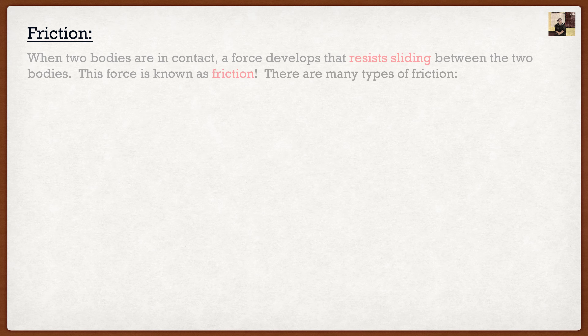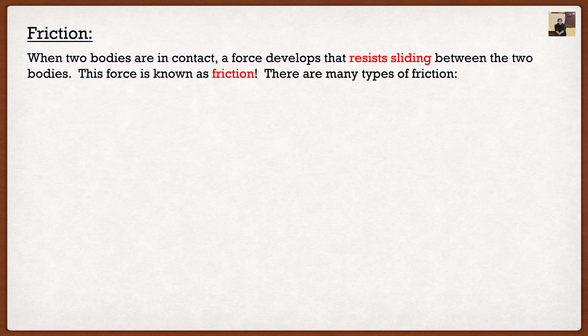Friction basically occurs when two bodies come into contact with each other. For example, I have two hands, I bring them together and try to slide. Well, depending on how much pressure I put between them, it becomes really hard to slide my hands. Because when two surfaces come together, a frictional force develops between these two surfaces to resist the sliding. And of course, we know this as friction.